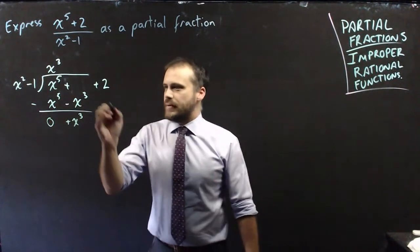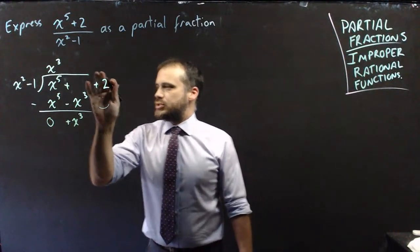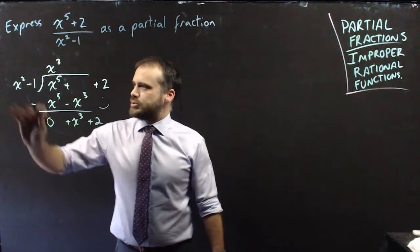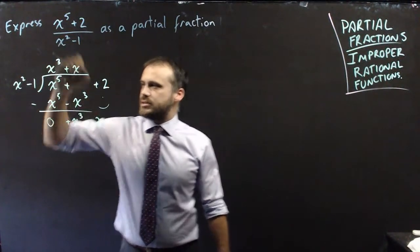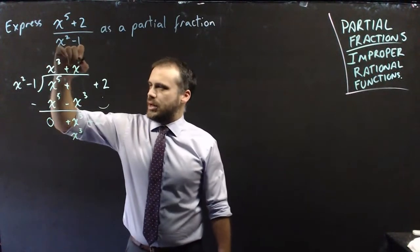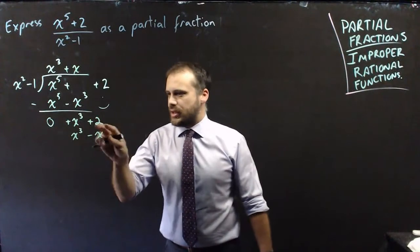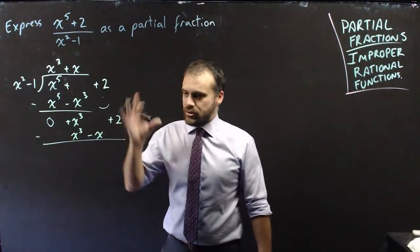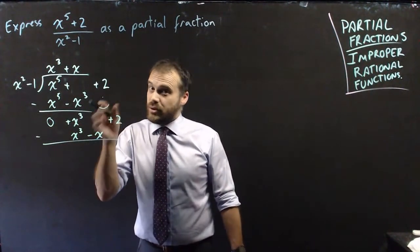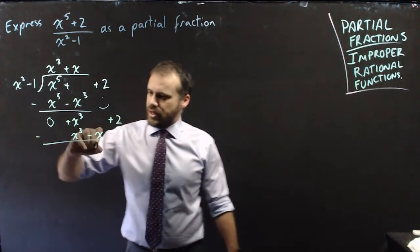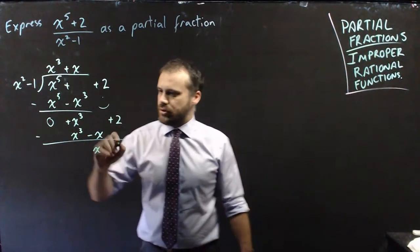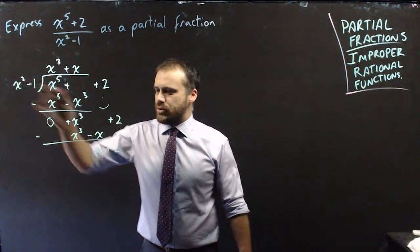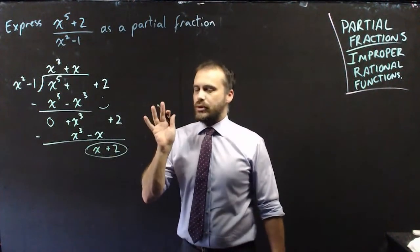We get a positive x cubed, and then there's a 0 sitting here, so 2 minus 0 is positive 2. Continuing on: x cubed divided by x squared is positive x. x times x squared is x cubed, and x times negative 1 is negative x. That x is not that 2, so I'll shove the 2 over. x cubed minus x cubed is 0. There's no x term, so 0x minus minus x is positive x, and we get positive 2. Finally, we can't divide x by x squared anymore, which means that x plus 2 is our remainder.